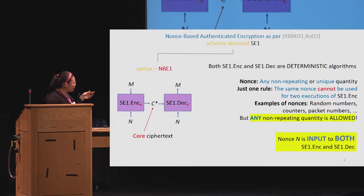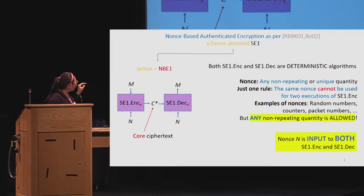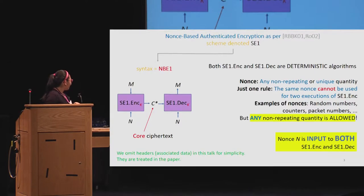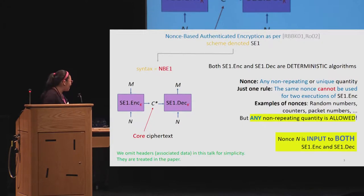I'll draw your attention to two very important points: we're supposed to be able to pick any non-repeating quantity, and the nonce is given as input to both encryption and decryption. Also note that half of AEAD is the AD part, but I'm leaving that out for this presentation to keep it simple. You can look at our paper if you want to discuss associated data.